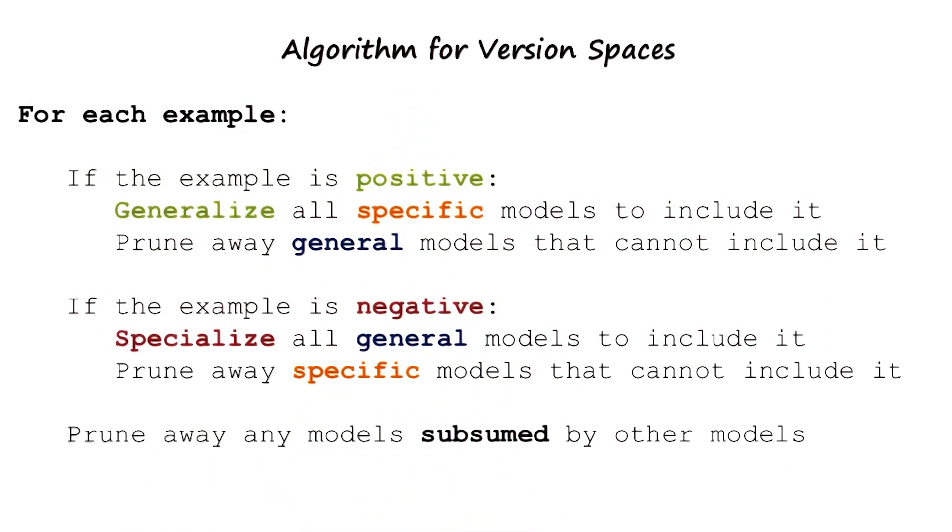Here is the algorithm for the version space technique. We'll go through it very quickly because we have already illustrated it in detail. If the new example is positive, generalize all specific models to include it. Prune away the general models that cannot include the positive example.